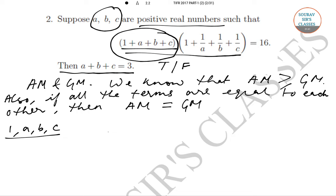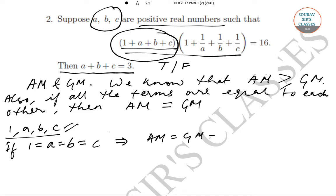We consider these four numbers since 1 + a + b + c appears in the problem. If all the numbers are equal to each other, that means 1 = a = b = c, which implies the AM equals the GM. That gives us (1 + a + b + c) / 4 = (1 · a · b · c)^(1/4).